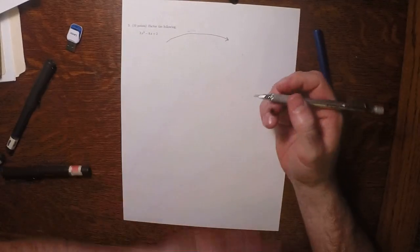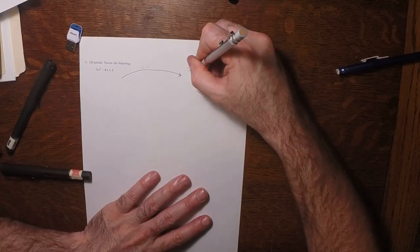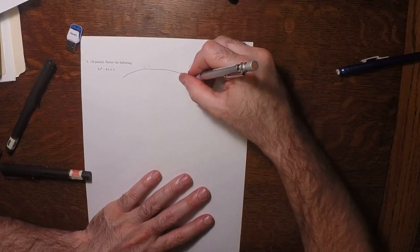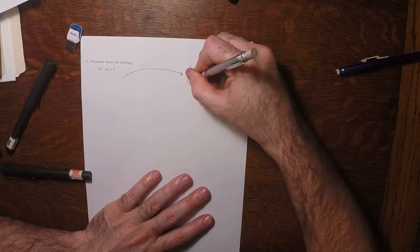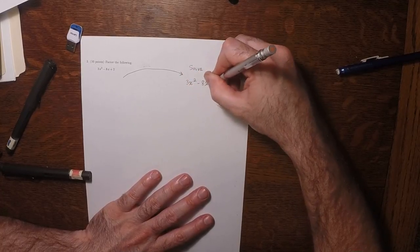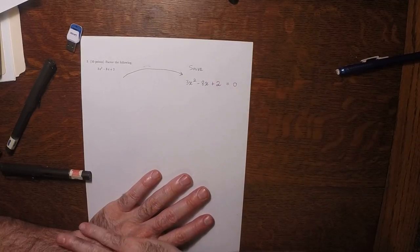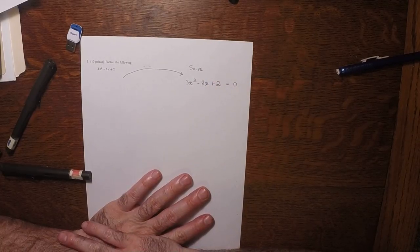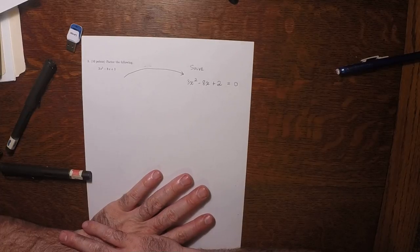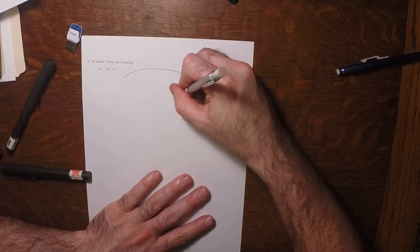So instead, what we're going to do is we're going to switch to the related problem. We're going to solve 3x squared minus 8x plus 2 equals 0. So we're going to solve that equation with the quadratic formula.